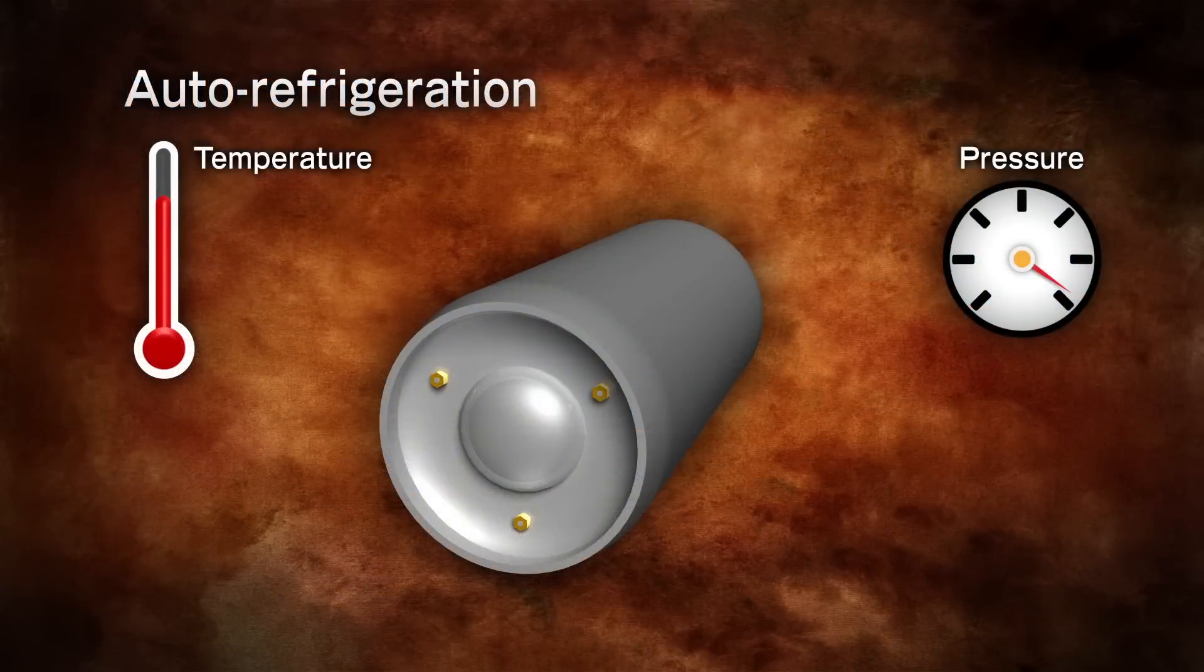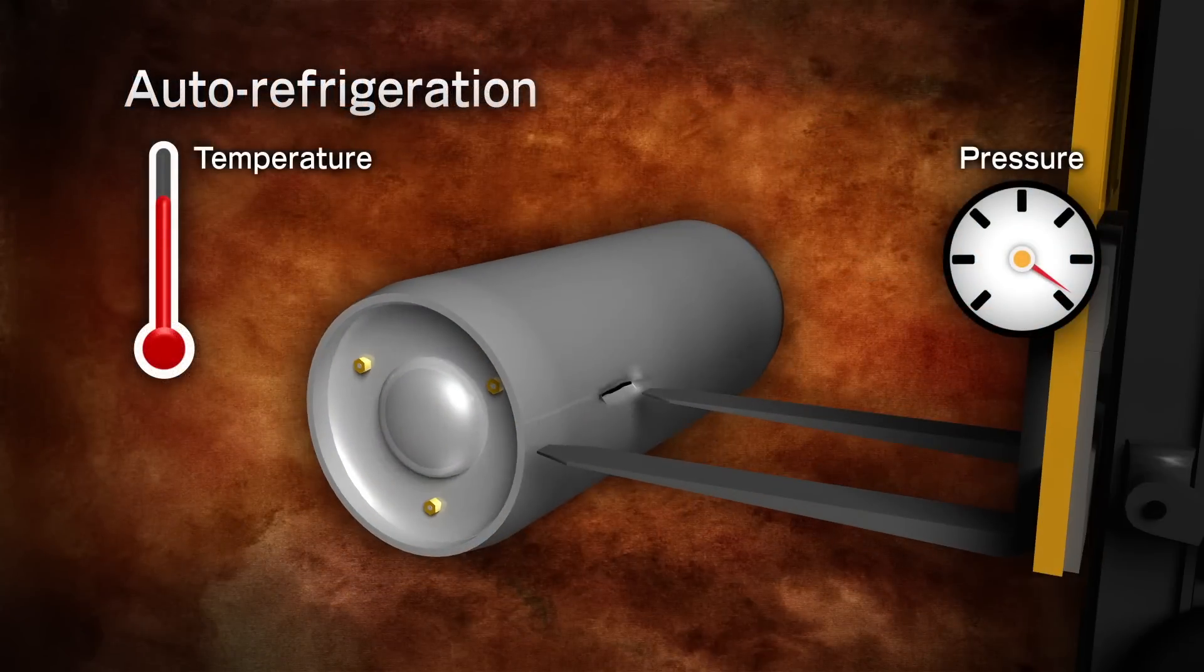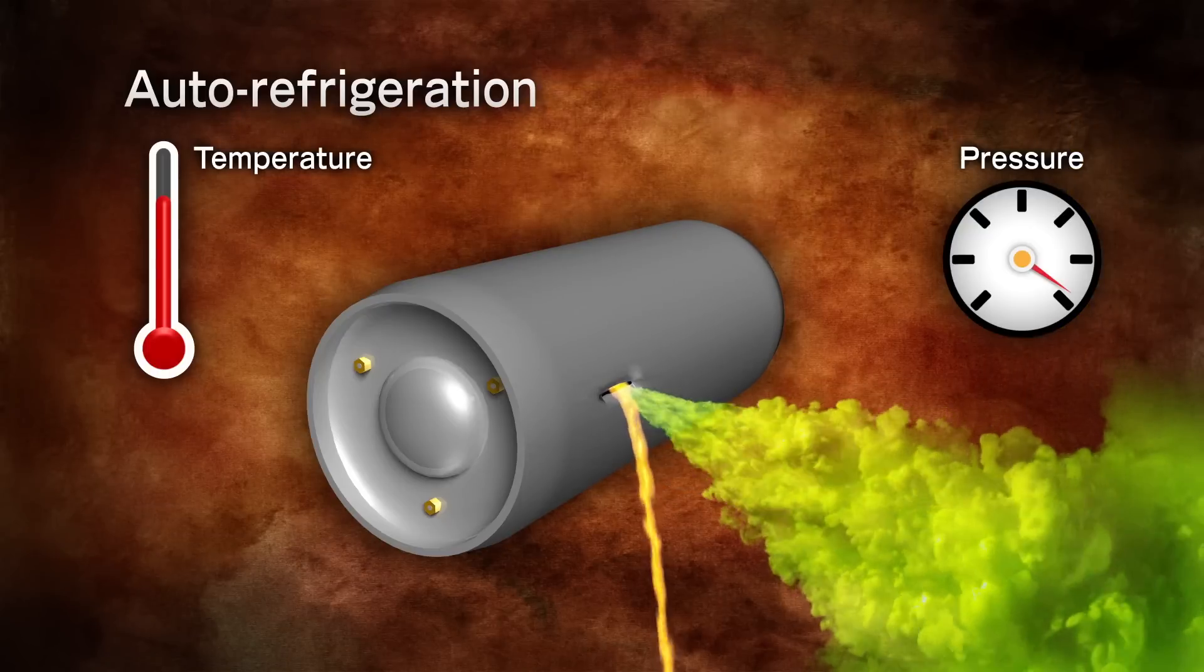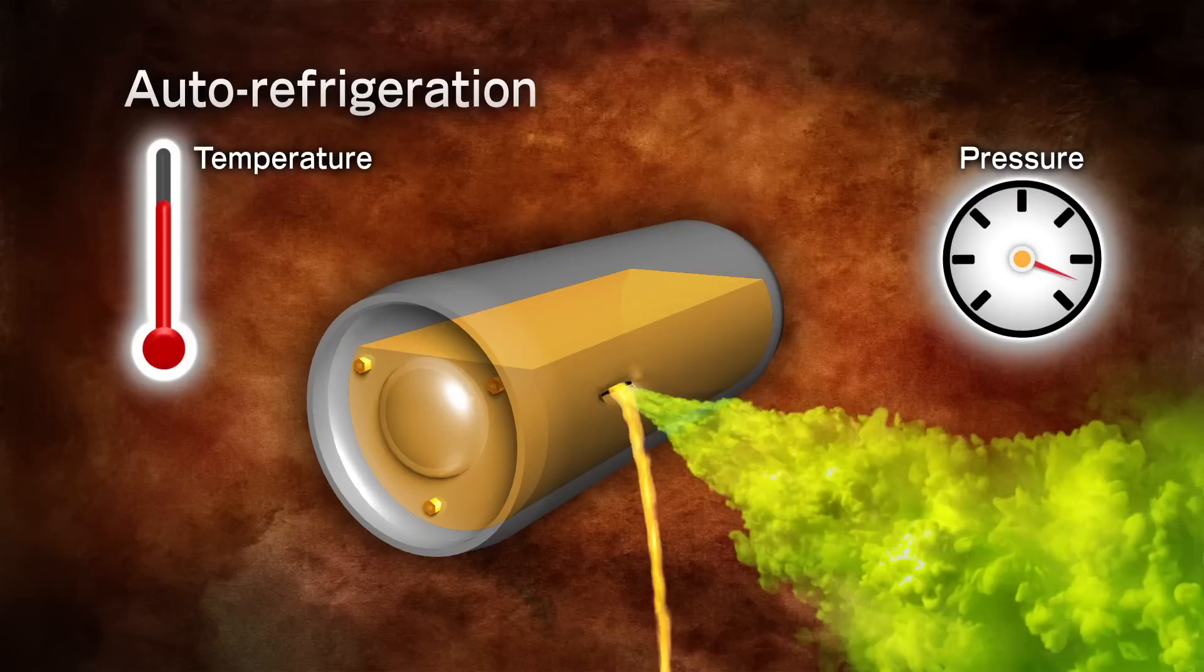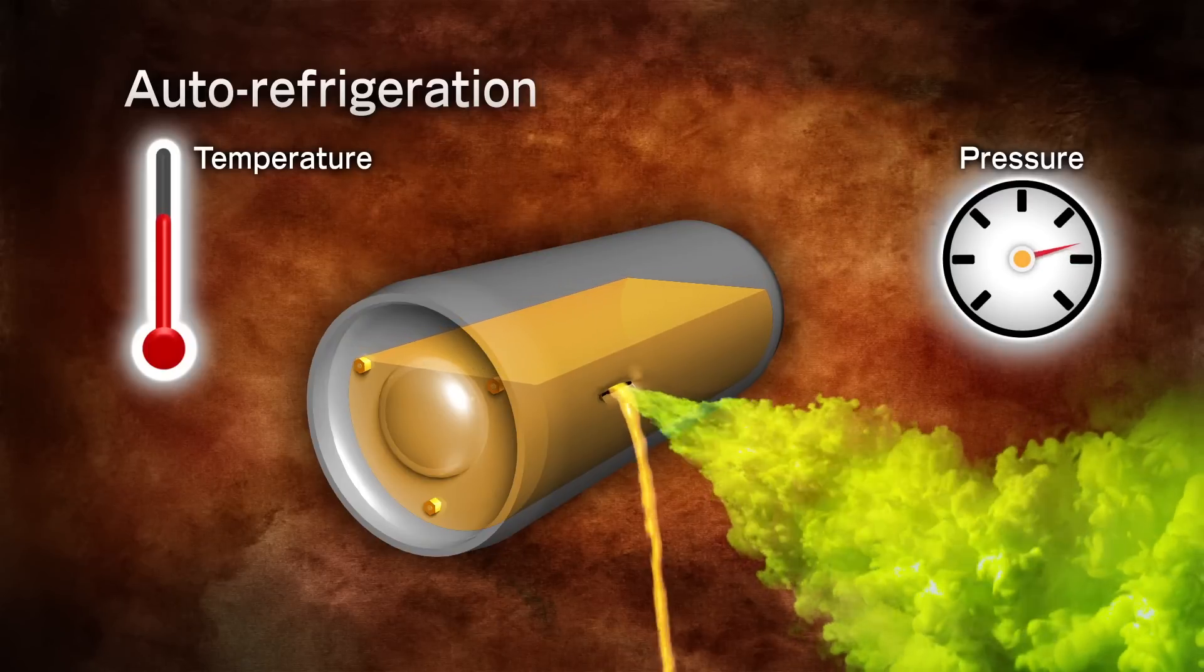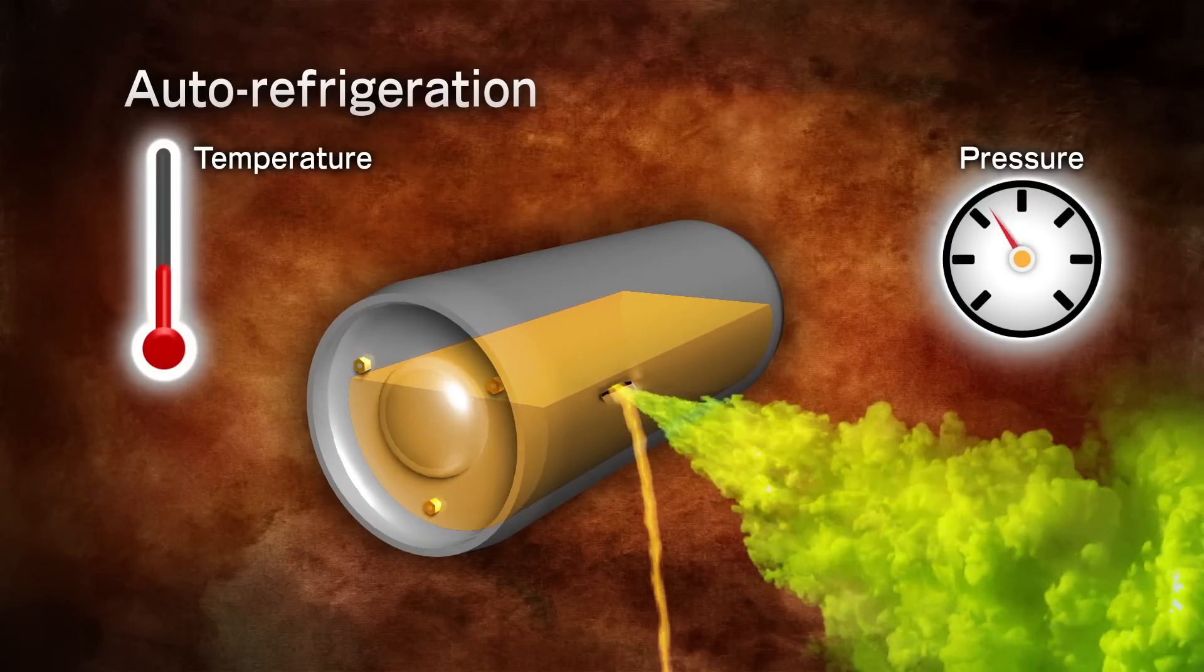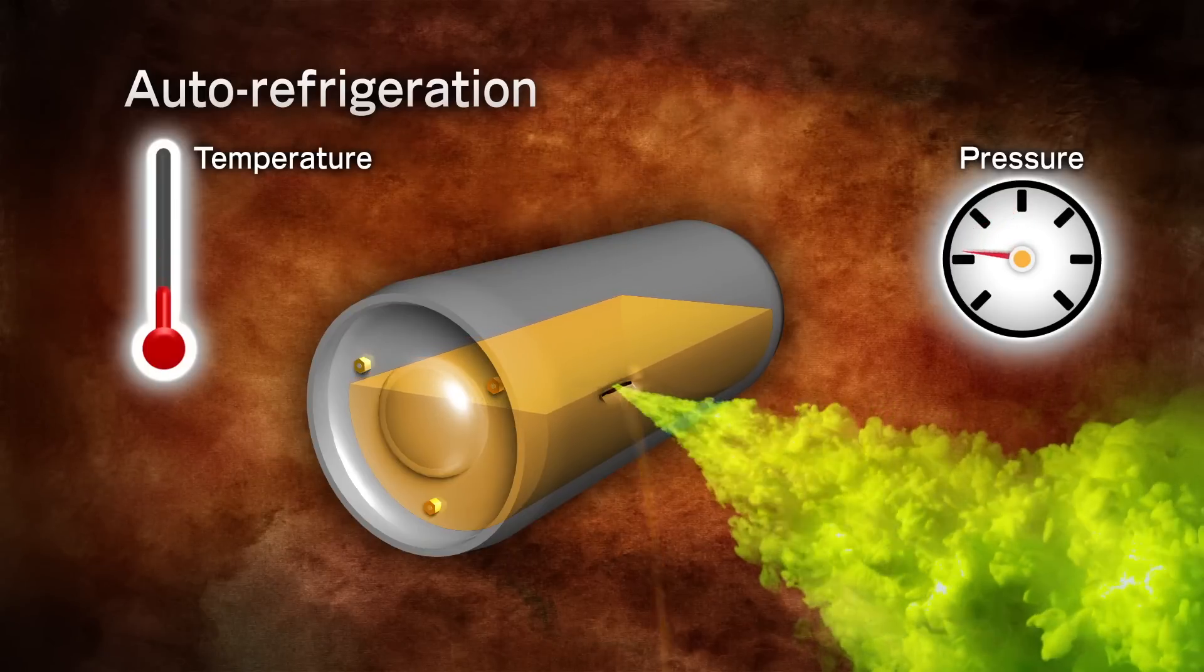When a chlorine container is punctured, allowing the chlorine to release, at first the chlorine will escape rapidly. As the chlorine is released, the container that was under pressure will now equalize in pressure with the atmosphere. Once the liquid level drains below the puncture point,